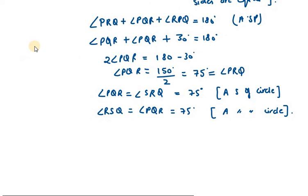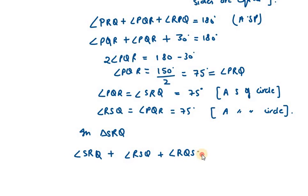In triangle SRQ, angle SRQ plus angle RSQ plus the third angle we need to find, angle RQS, equals 180 degrees. The first two angles are 75 degrees each.